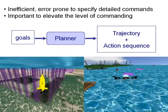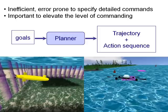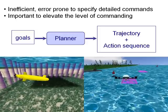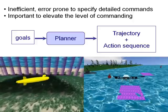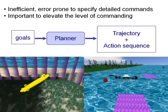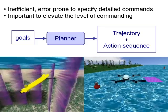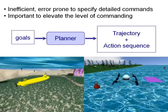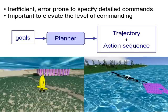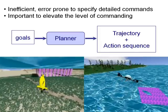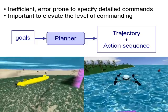Controlling an autonomous vehicle in order to accomplish a task requires an understanding of many aspects of the problem, from the vehicle's dynamics, to obstacles to avoid, to the values of each objective. It can be inefficient, error-prone, or impossible for human operators to specify a detailed action sequence. Thus, it is important to elevate the level of commanding such that human operators only need to specify a set of goals to be accomplished, and then have planners produce a series of actions that achieve the mission goals based on the model of the physical plant under control, the environment, and the objectives.